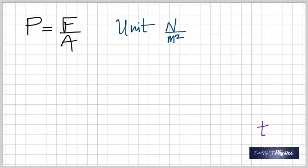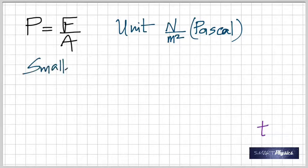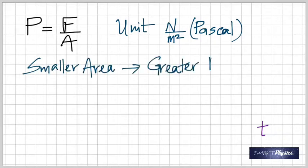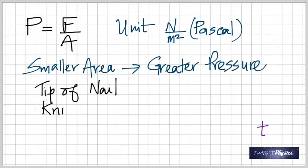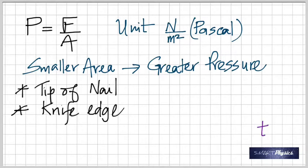Pressure is force divided by area. Force is in Newtons, area in meters squared, so the unit is Newton per meter squared, also called Pascal. Smaller area means greater pressure. Examples: the tip of a nail, a knife edge. You can cut a piece of cake with a knife because the edge has a small area — high pressure. That's what 'sharp' means: small area, so applying a force creates great pressure.